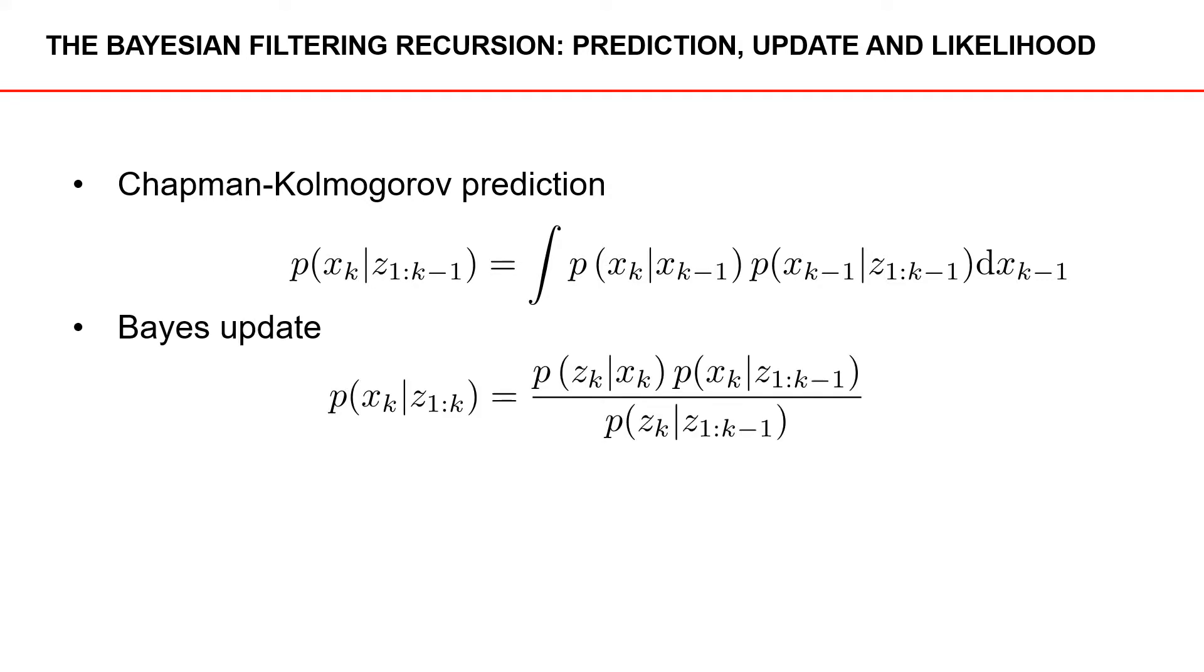The second step is the Bayes update. Here, we take the predicted density, the density of the state at time k given measurements up to and including time k-1, and we also take the measurement likelihood, so the density of the measurement given the state, and then we normalize this. And this gives us the updated density, the density of the object state x at time k, given measurements up to and including time k.